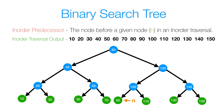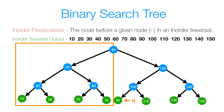If n was 90, we have the same situation — no left subtree to search in. We know all values in the rectangle are smaller than 90. Since 90 doesn't have a left subtree, the first left ancestor is going to be that node's predecessor. Going up the tree, 100 is the first right ancestor, then 120, which is also a right ancestor, but we finally get to 80, which is the first left ancestor. So 80 is going to be the predecessor to 90.